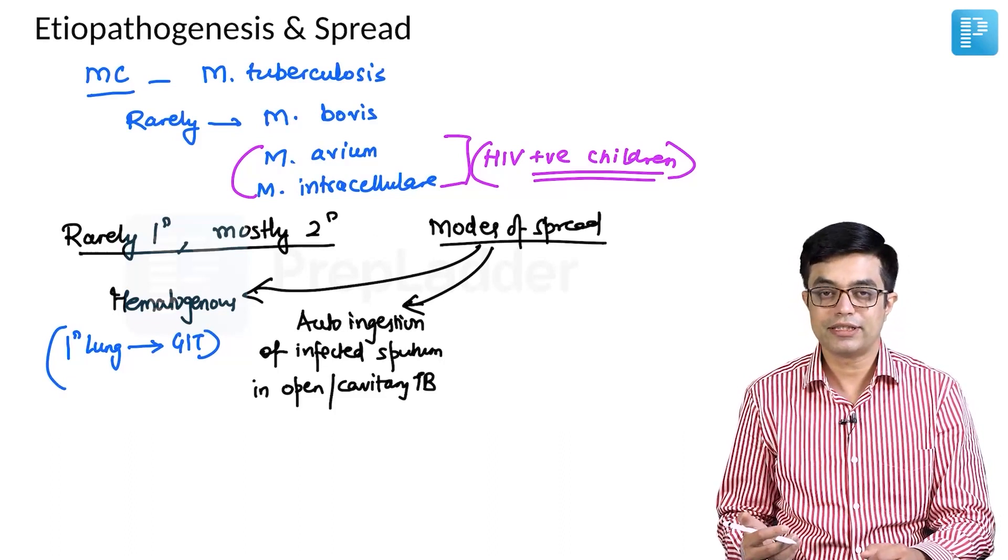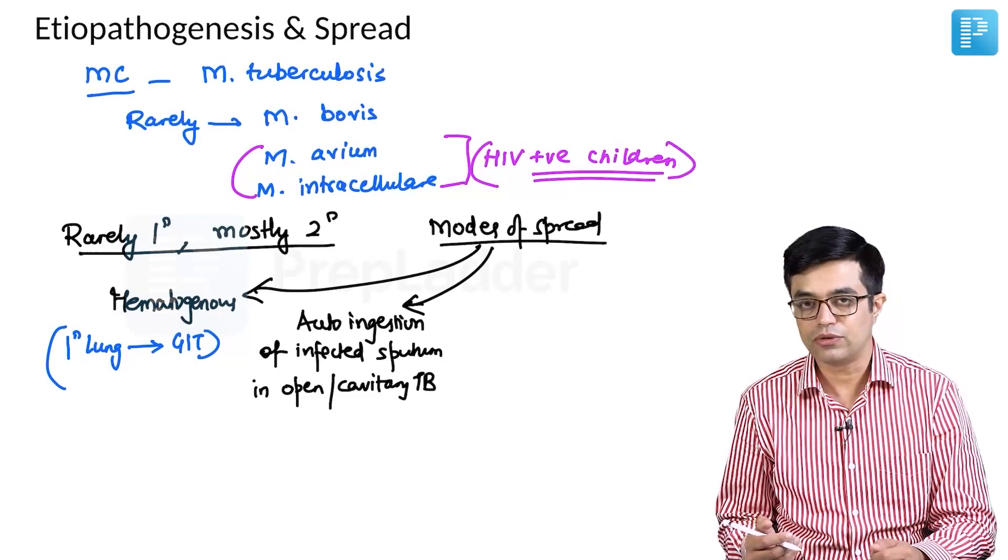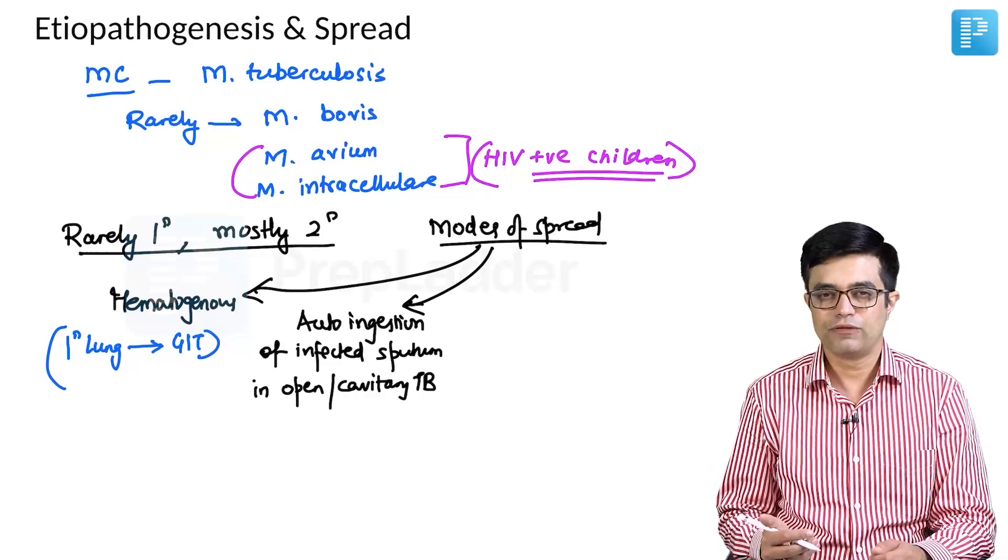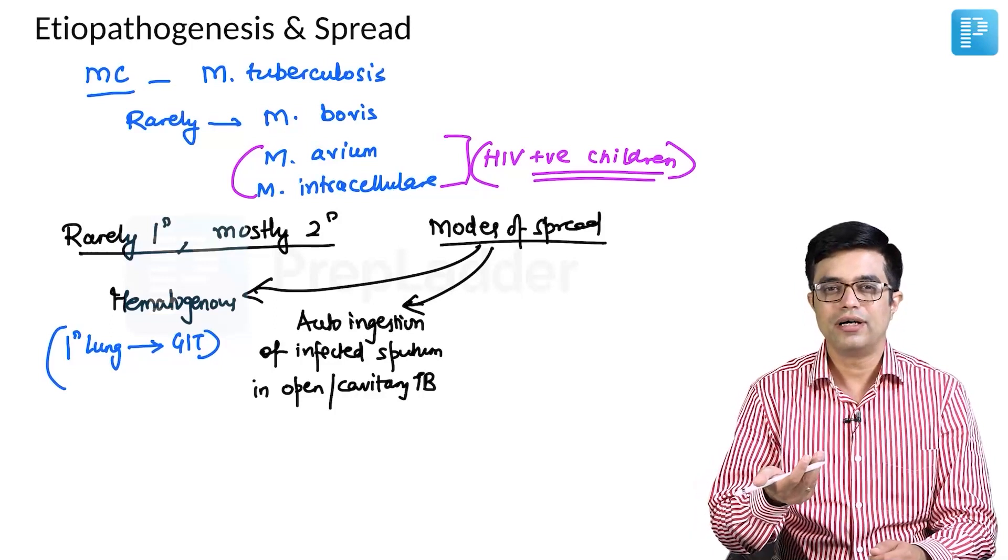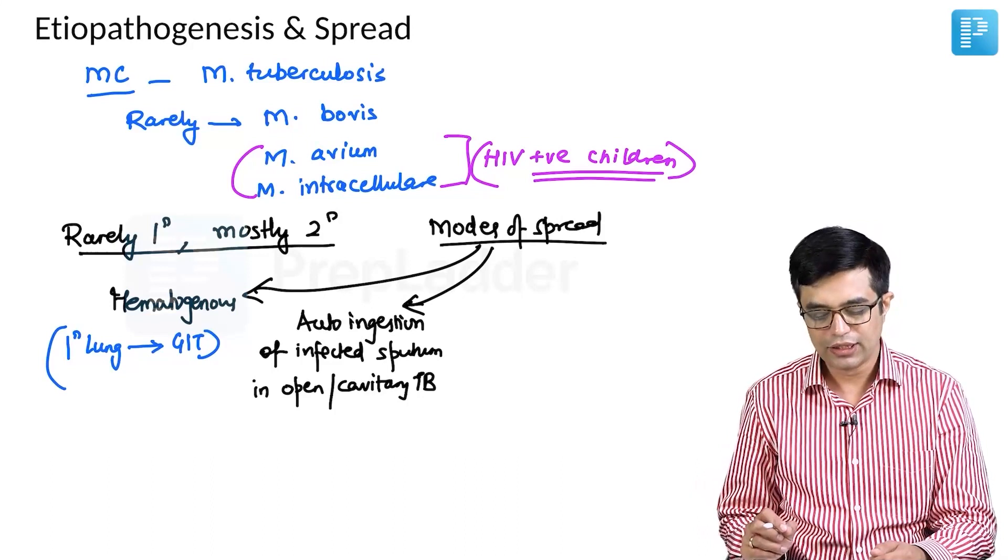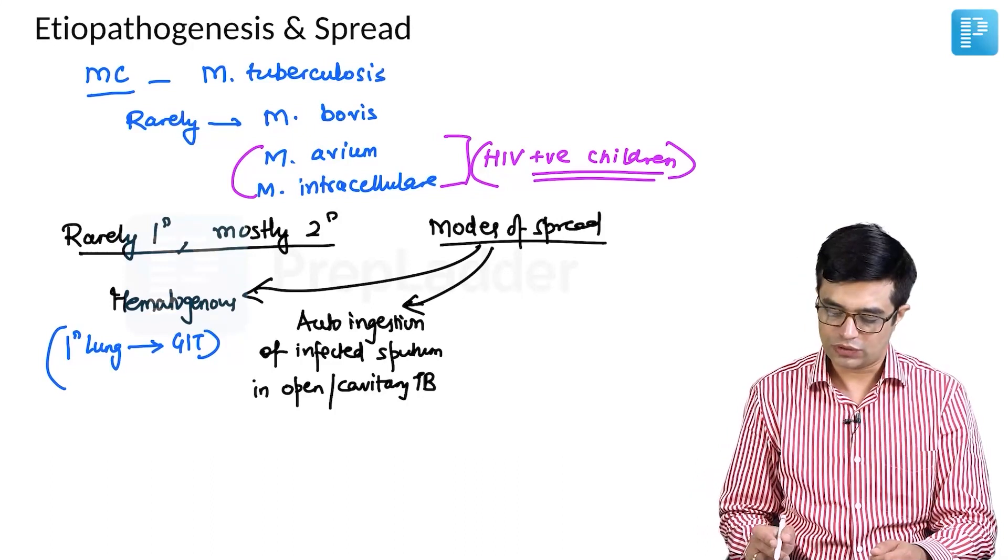This pulmonary tuberculosis is in the form of open or cavitary tuberculosis. So, their sputum will be filled with these organisms. When they swallow their own sputum and it goes into the GIT, it will cause seeding of the GIT producing abdominal tuberculosis.